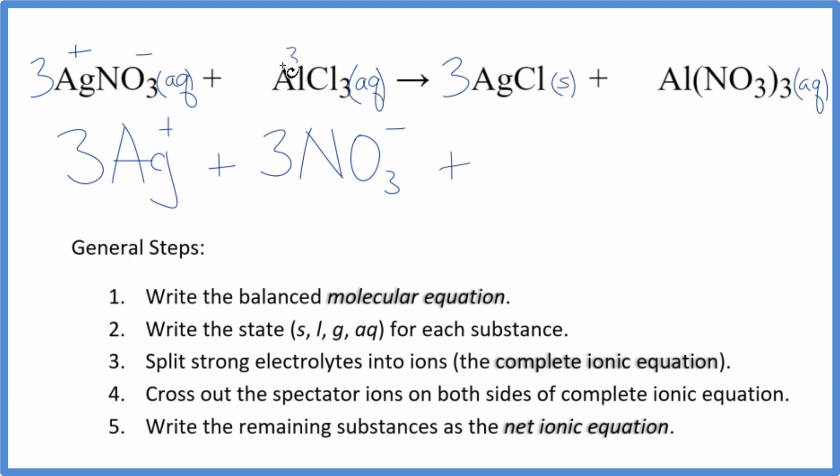Then we have aluminum. That's 3+, group 13 on the periodic table. Chloride, 1-. Each one is 1-. So I have an Al 3+, the aluminum ion, plus I have three of these chloride ions.